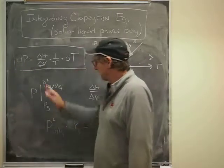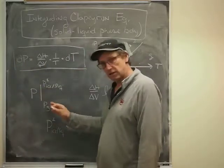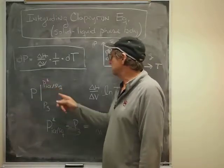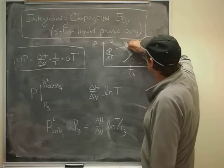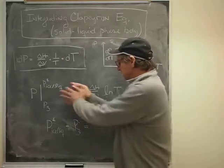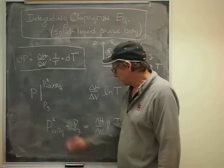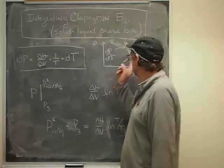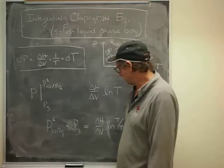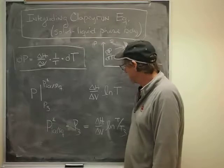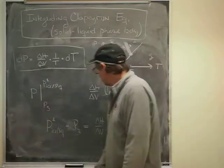So DP integrated becomes P evaluated from P3, our starting point, up to what I'll call P star ice liquid. P star ice liquid is that line. And that, of course, will just integrate out to being the pressure, P star ice liquid along that line, whatever temperature we want to go to, minus the starting point, which is the triple point pressure. So that's the left-hand side of that equation.